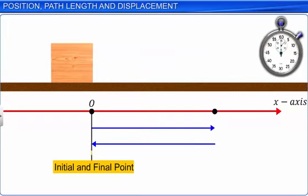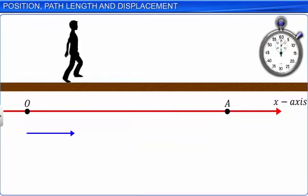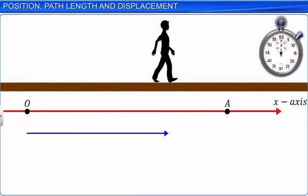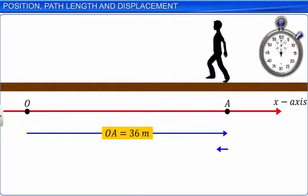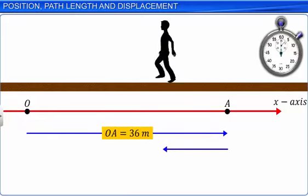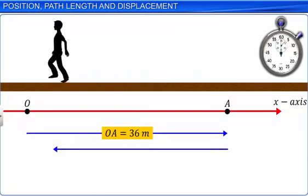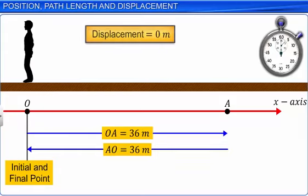For example, if the man starts from O, goes to A, and comes back to O, the final and initial positions are the same, so his displacement is zero. However, the path length of his journey is 72 meters.